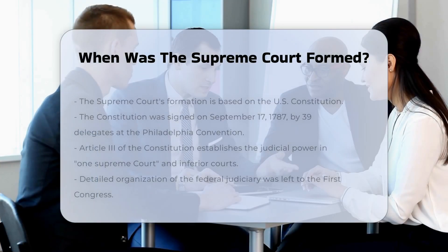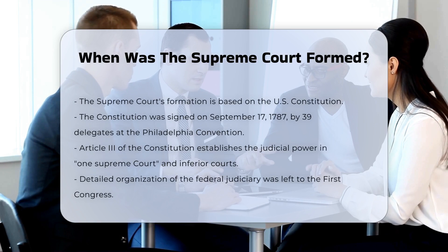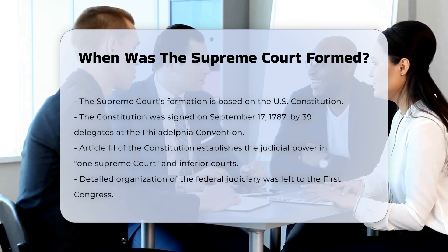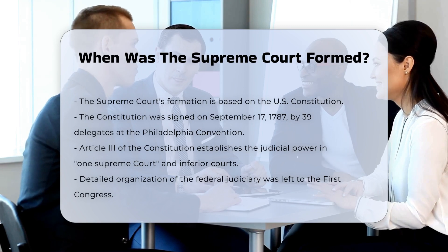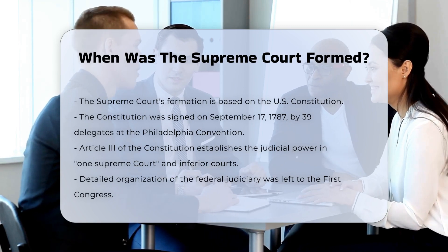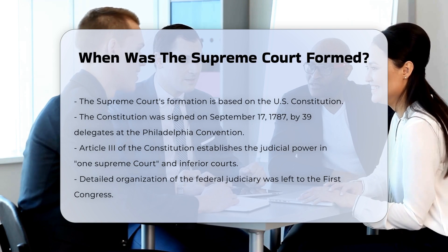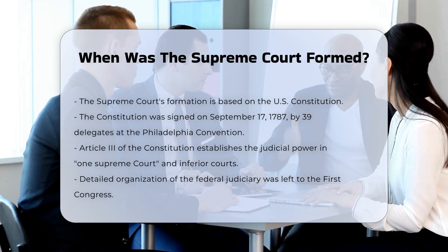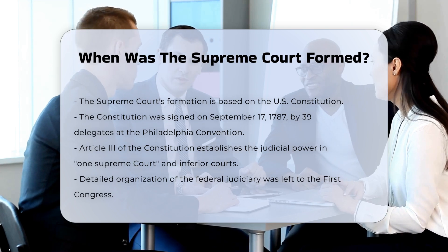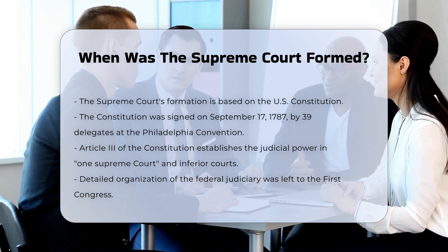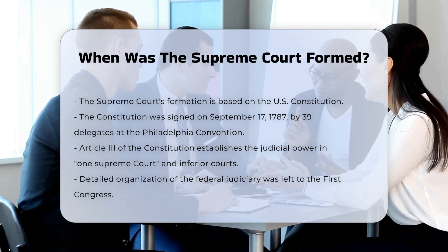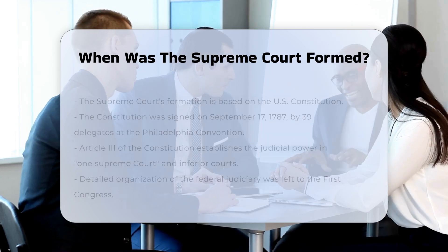The formation of the Supreme Court is deeply rooted in the U.S. Constitution. On September 17, 1787, 39 delegates to the Philadelphia Convention signed the U.S. Constitution, which includes Article 3. This article invests the nation's judicial power in one Supreme Court and in such inferior courts as the Congress may from time to time ordain and establish. The Constitution, however, did not provide the detailed organization of the federal judiciary.